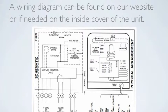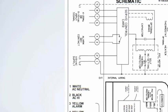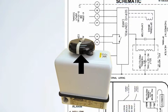A wiring diagram can be found on our website or if needed on the inside cover of the actuator. To access the terminal strip, remove the black indicator cap by pulling upward, remove the exposed screw with a Phillips head screwdriver, and pull the cover off the base.